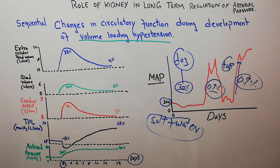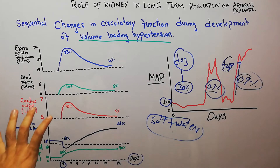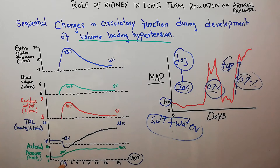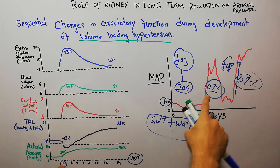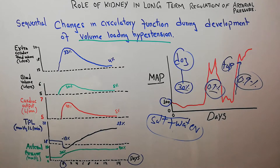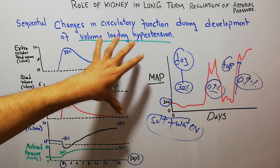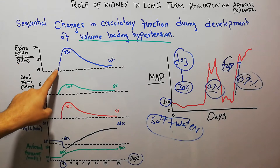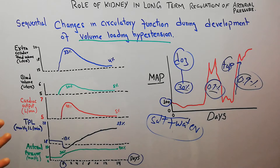We want to see what will occur when the body of the subject is being loaded with extra volume. The subject is being given extra salt and water — around 4 to 5 percent above normal intake — and this time the experiment is not stopped for tap water. Initially at day zero, the first change is an increase in extracellular fluid volume, because the body is being loaded with extra fluid.